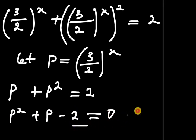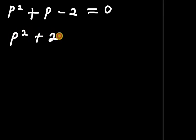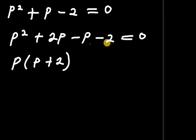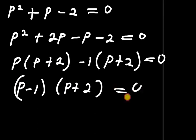Let's go ahead and solve this using the factorization method. We need numbers that multiply to give negative 2 and add to give positive 1. So this becomes p squared plus 2p minus p minus 2 equals to 0. Factoring: p into p plus 2, minus 1 into p plus 2 equals to 0. Grouping: we get p minus 1 times p plus 2 equals to 0.